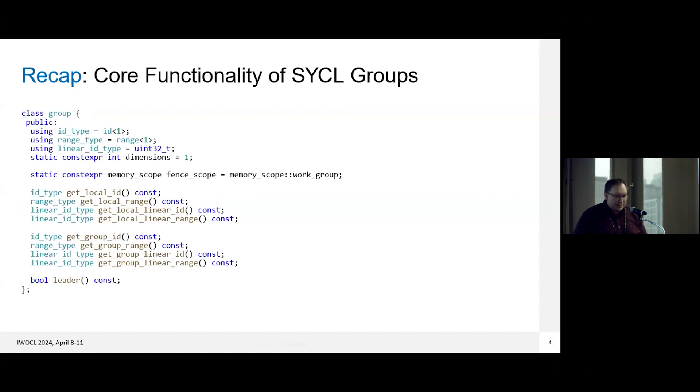So we'll start with a quick recap of what the group lets you do. It has several type aliases that are required to define group algorithm interfaces. It has a memory scope that's required in order to use group barriers. And it has a lot of utility functions that you can use to identify the work items indexed within the group and the group indexed within the implicit parent group. So we have a strong desire to keep this interface basically exactly the same, but to support a group's concept. And we don't want to cause any backwards compatibility issues with SYCL code that's already out there. But some of these definitions do cause some problems.